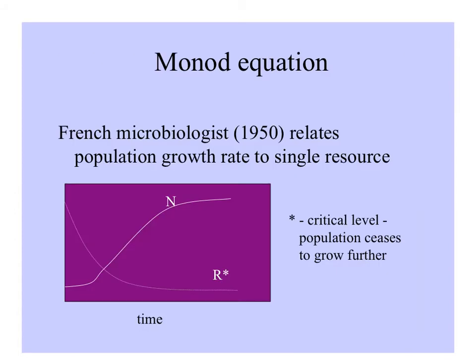Jacques Monod, the French microbiologist in the 1950s, related population growth rate of bacteria to a single resource. With amounts on the y-axis and time on the x-axis, the populations grow and the resource levels are diminished until a critical level of resources is reached and the population ceases to grow any further. We call that critical level R-star.